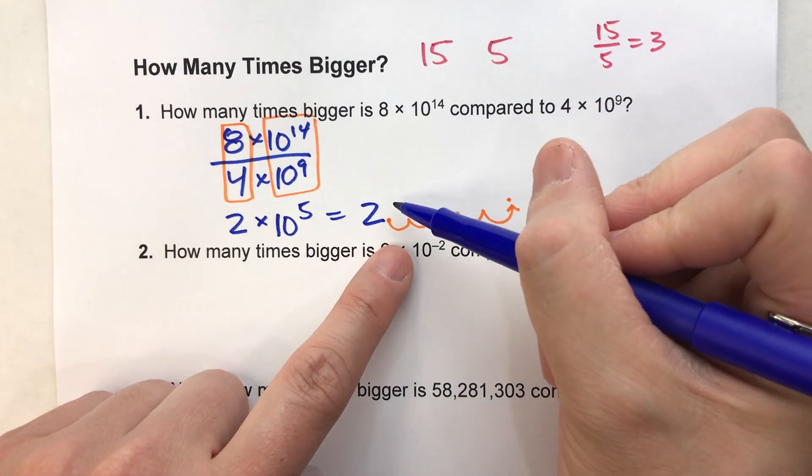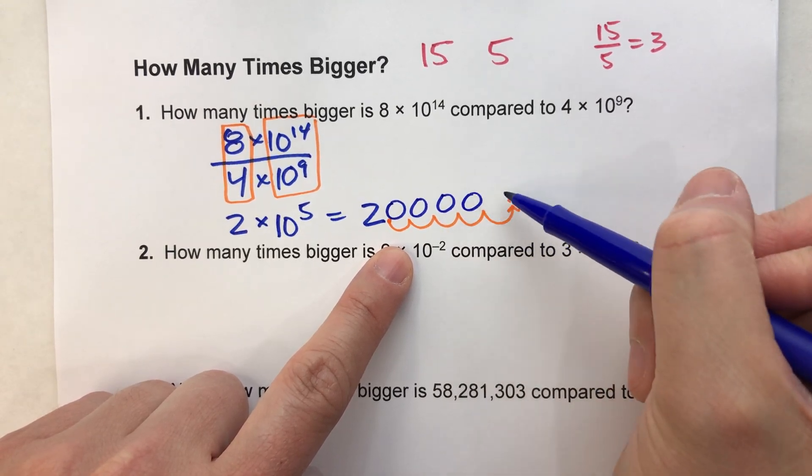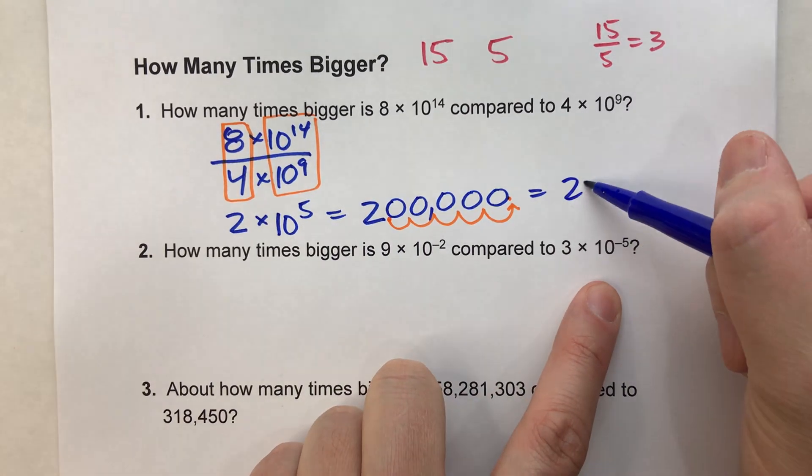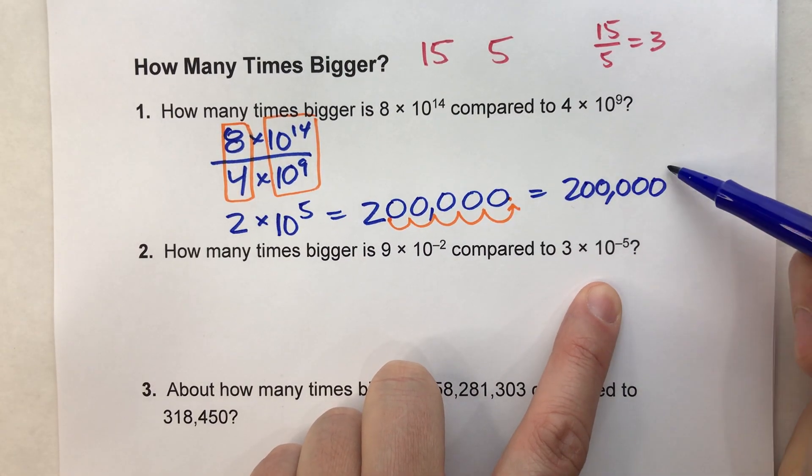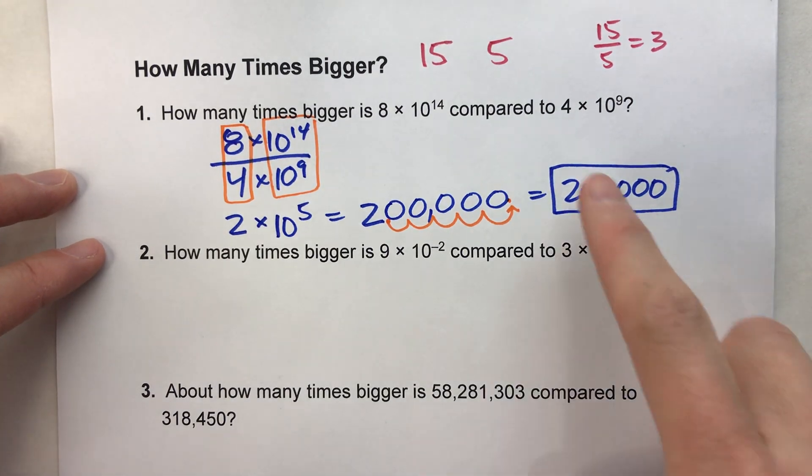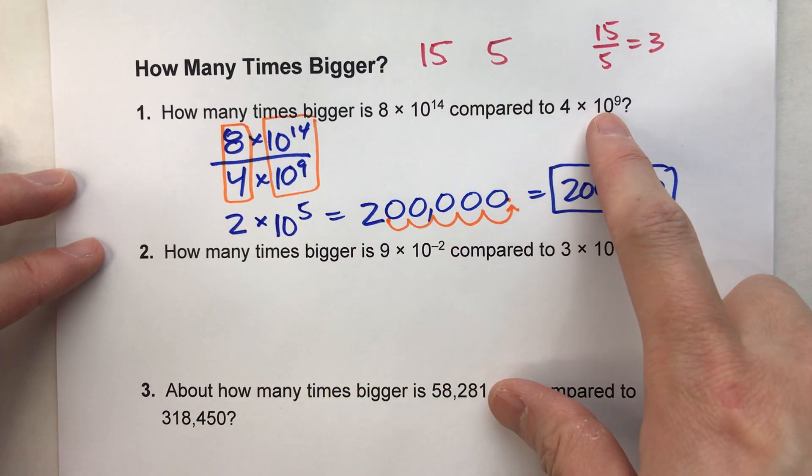Fill those empty spots with zeros, and look what we have. This is 200,000. So it's 200,000 times bigger, this number, compared to that one.